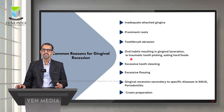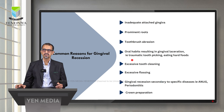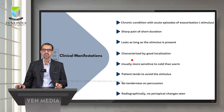Common reasons for gingival recession include inadequate attached gingiva, prominent roots of teeth, toothbrush abrasion, oral habits resulting in gingival laceration such as traumatic toothpicking or eating hard foods, excessive tooth brushing or cleaning, excessive flossing, and gingival recession secondary to specific diseases like ENRG or periodontitis. Crown preparations can also cause some degree of gingival recession.